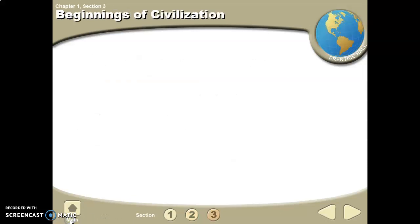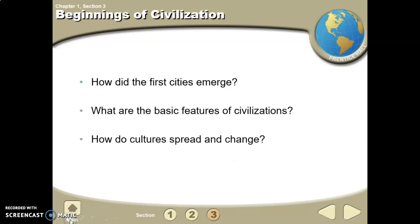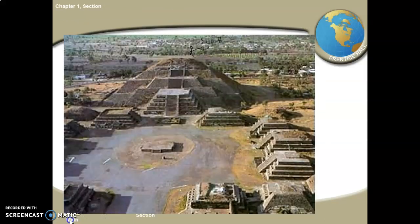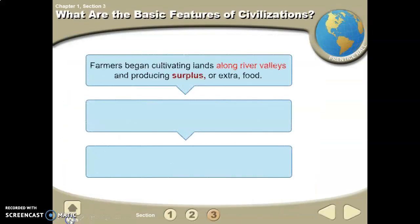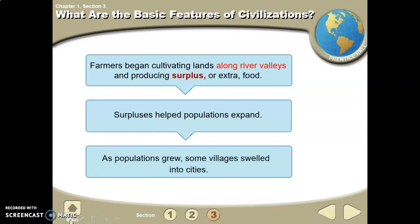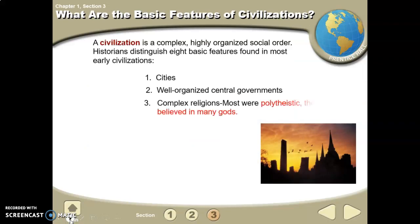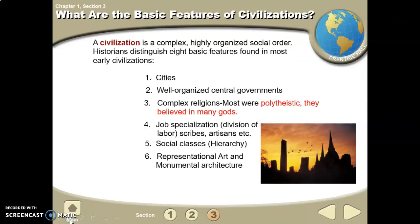Farmers began cultivating land along river valleys, producing surpluses of food — extra food. These surpluses helped populations expand, and as populations grew, some villages grew into cities.